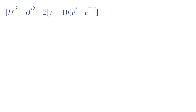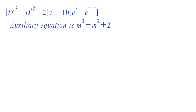Now we have to find the solution of y, which is always the sum of complementary function plus particular integral. To find the complementary function, we find the auxiliary equation of D'³ − D'² + 2 = 0. Substituting m for D', the auxiliary equation is m³ − m² + 2 = 0.